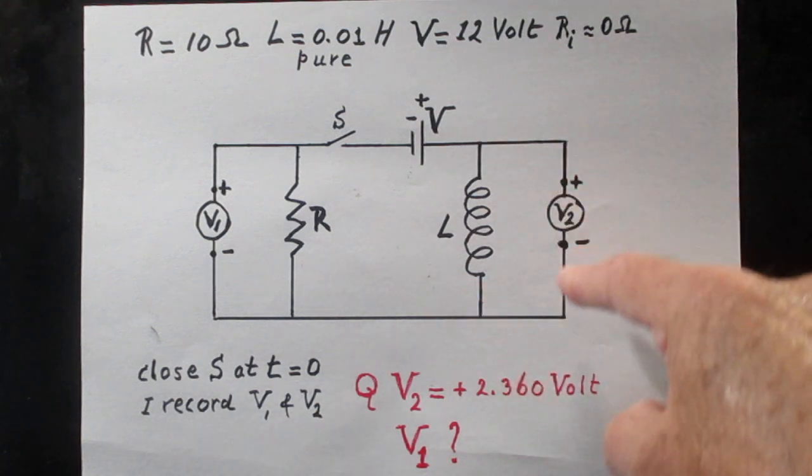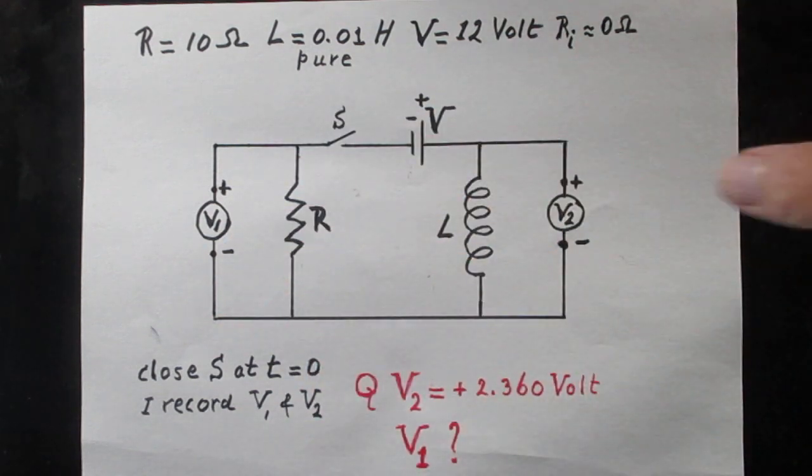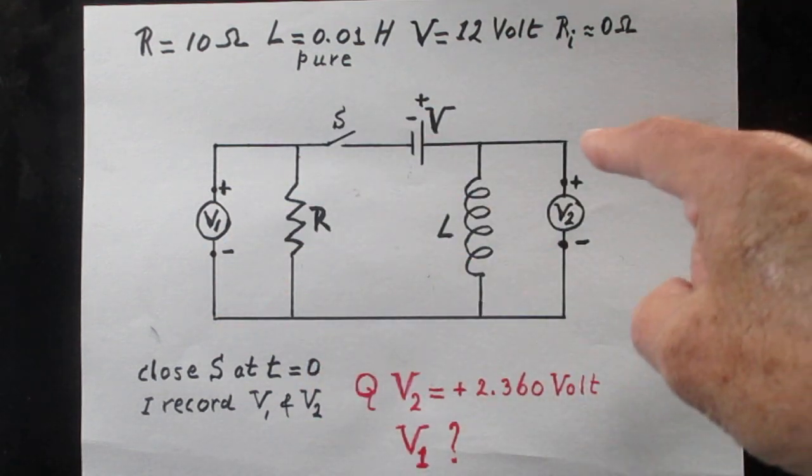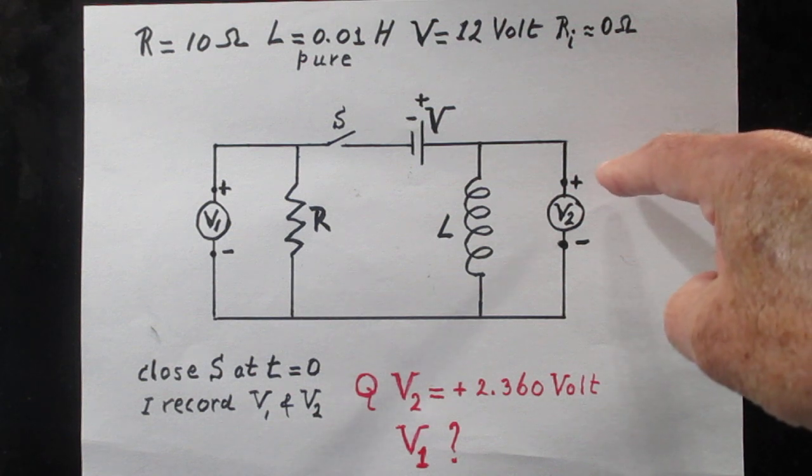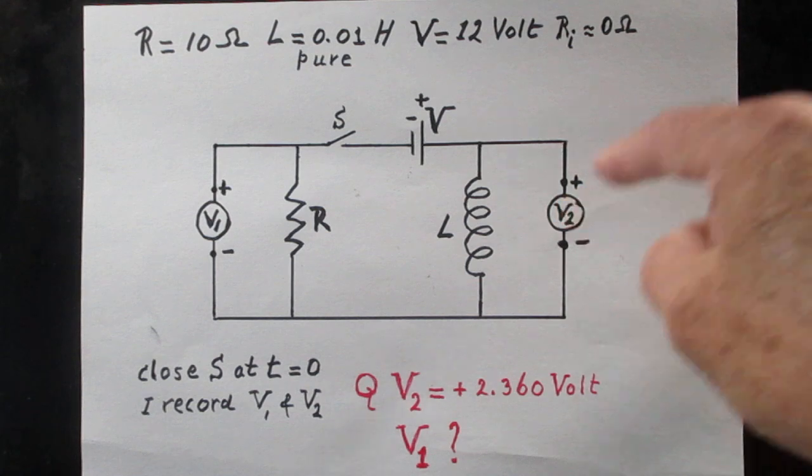There is a voltmeter here. All the lines, by the way, are wires with zero resistance. The plus side is here and the minus side is there, and I call that V2.